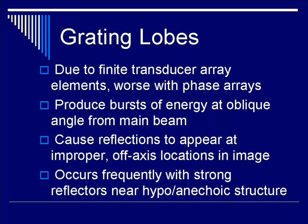Next, we'll move on to a similar entity — grating lobes. Grating lobes are related to finite transducer array elements and are worse with phased arrays. Grating lobes produce bursts of energy at an oblique angle from the main beam. They cause reflections to appear at improper off-axis locations in the image, similar to side lobes, and they occur frequently with strong reflectors near hypoechoic and anechoic structures, again such as the bladder.